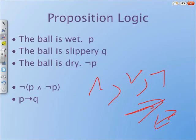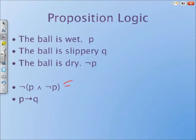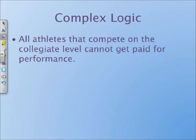If the ball is wet, then it is slippery. If P, then Q. This is your classic conditional operator. We can also form a tautology here, which is, it is not the case that the ball is wet and dry. Not P and not P is true because P and not P is false.